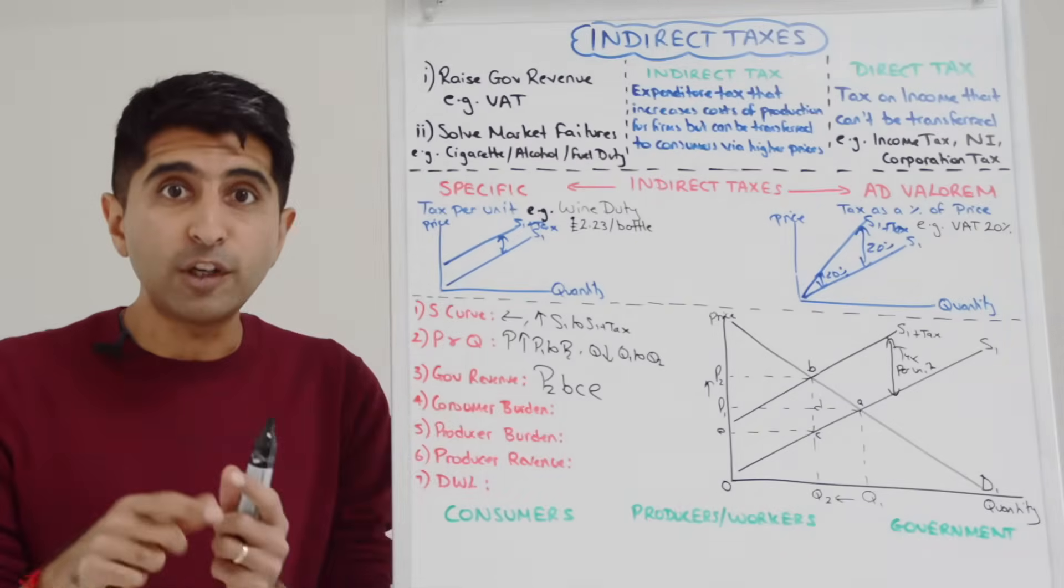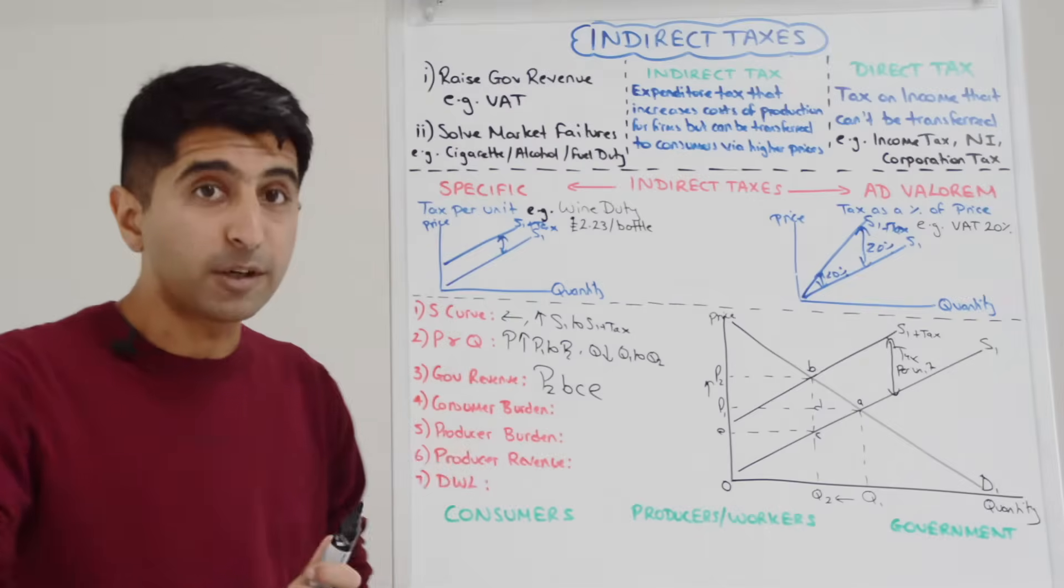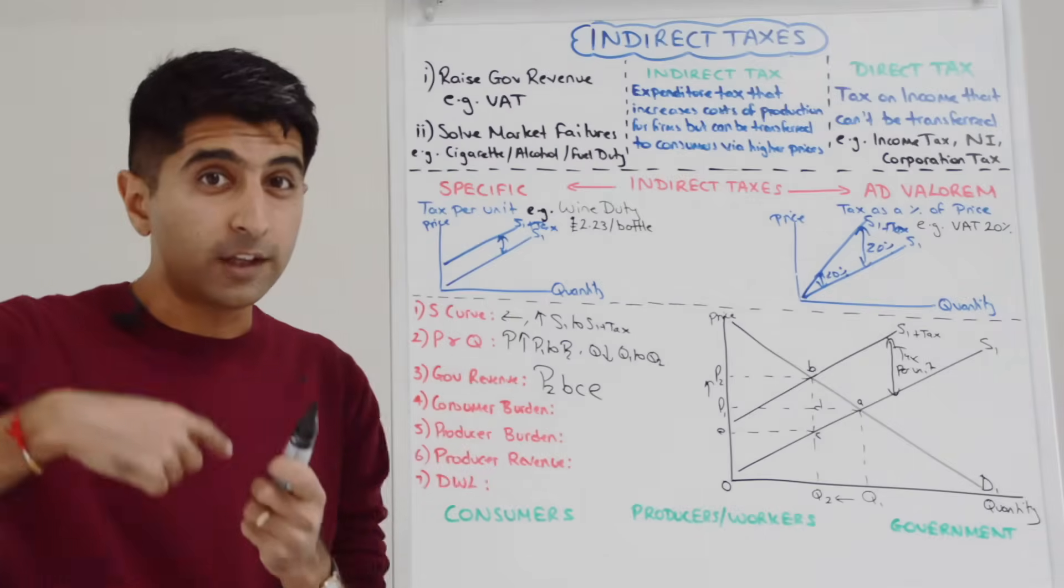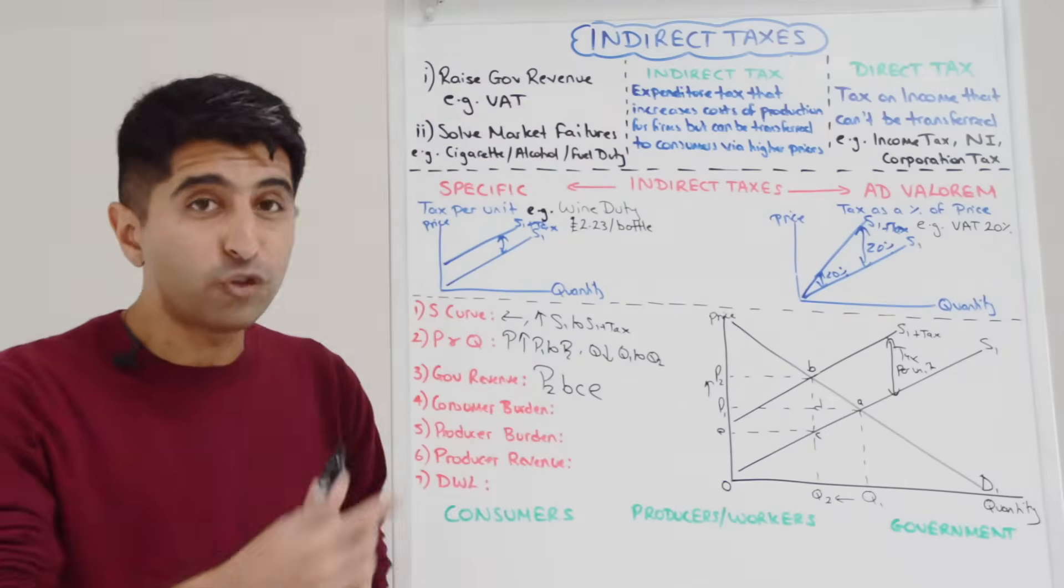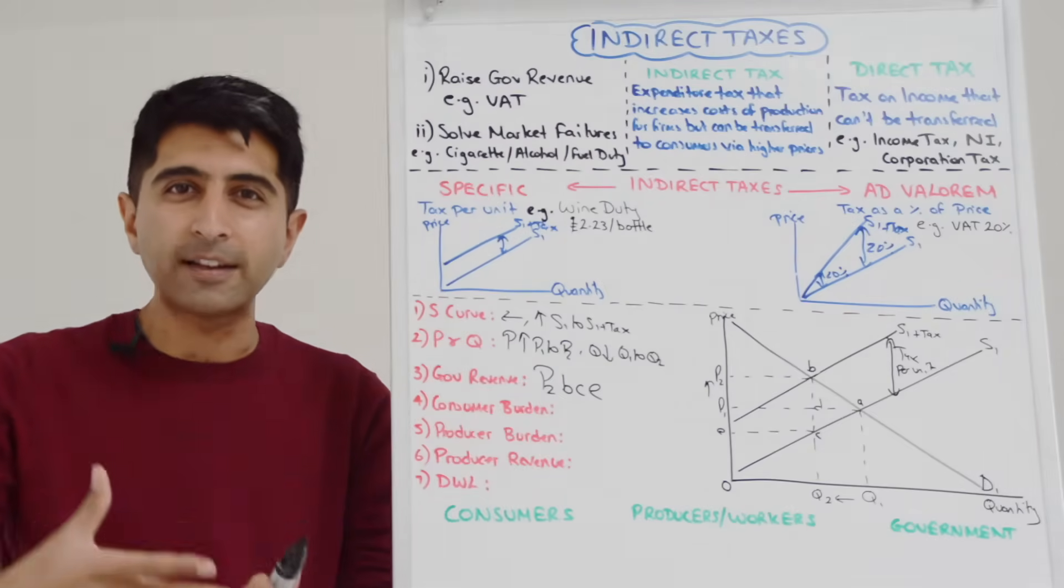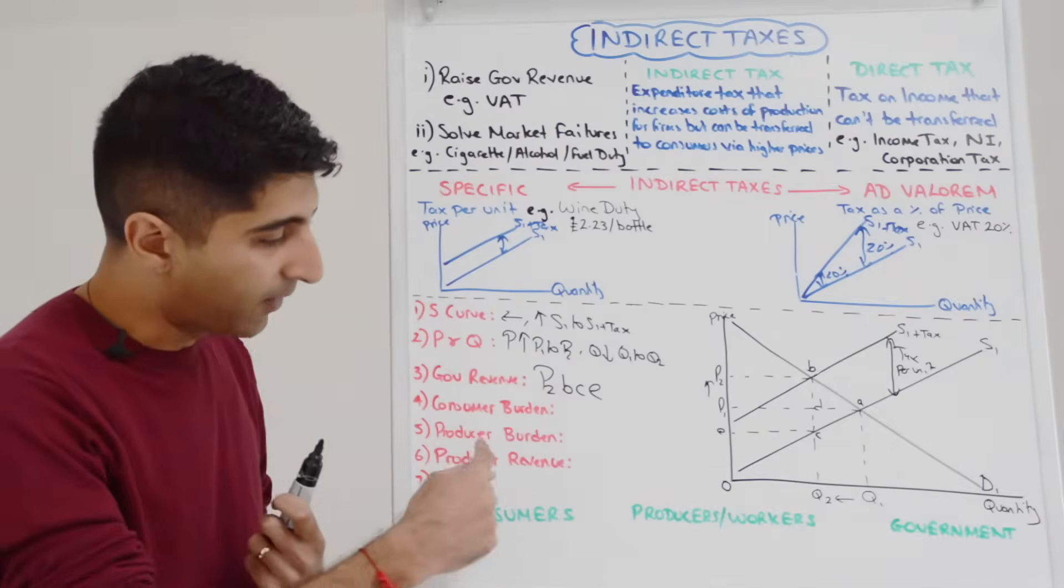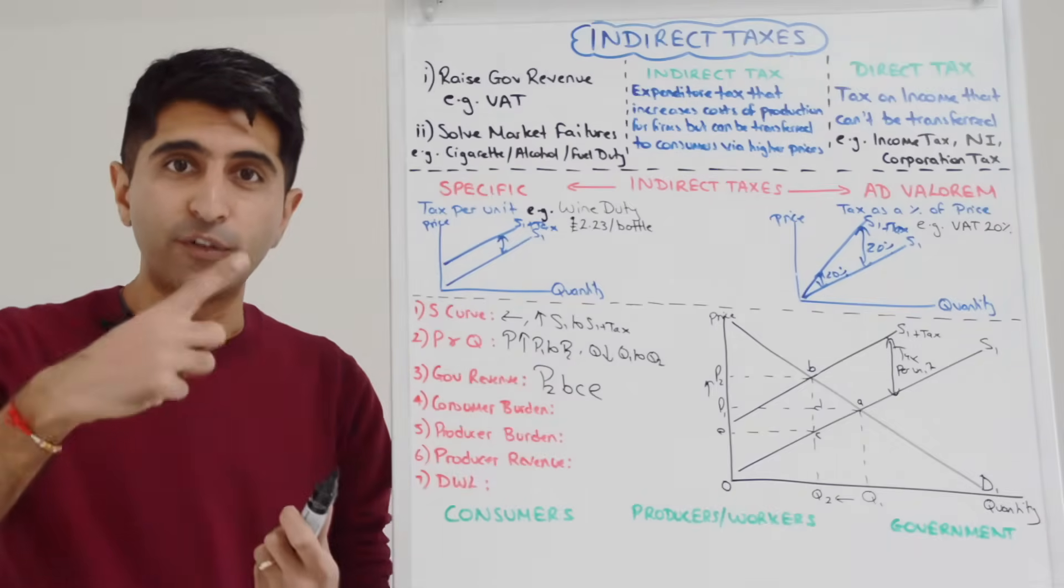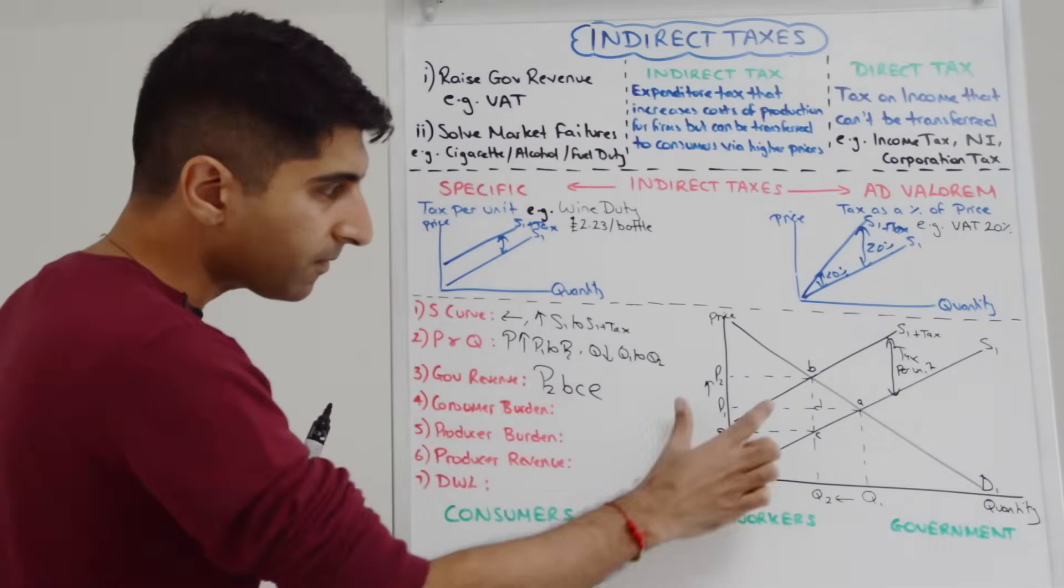We can go even deeper and we can work out how much of that revenue the consumer is paying and how much the producer is paying, what we call the consumer burden and the producer burden. Another name, the consumer incidence, i.e. how much of that tax is falling on the consumer and the producer incidence, how much of the tax is falling on the producer.